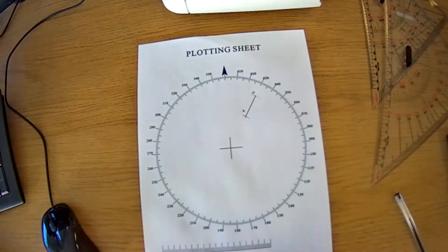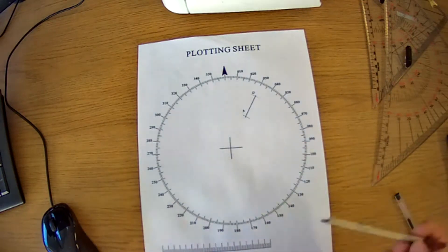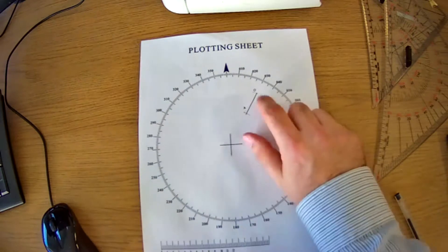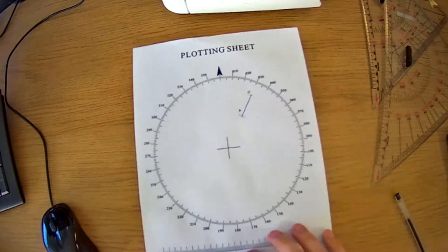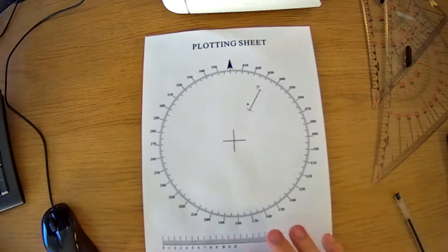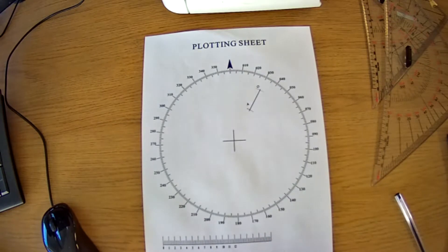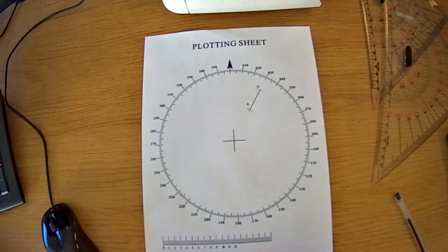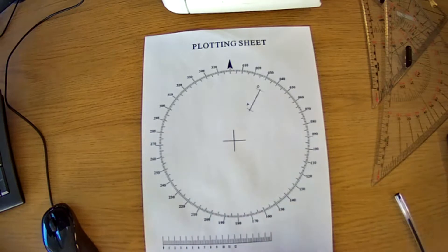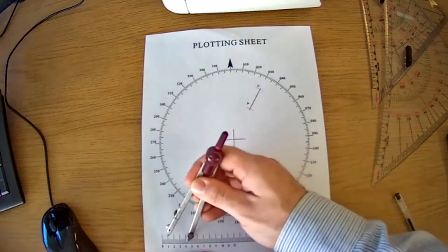The next thing in a radar plot is we lay off our course and speed on our WO line — WO is 'water on O'. To do that, we find out how far we travelled for the duration of the plot. In this example, doing 12 knots: 12 divided by 60 tells us every single minute we went 0.2 of a mile. Times it by the 20-minute plot interval to get 4 miles.